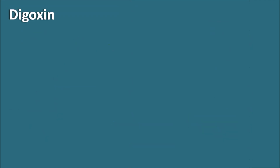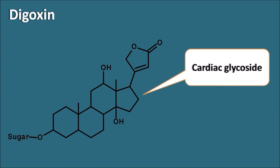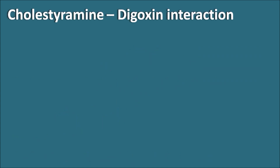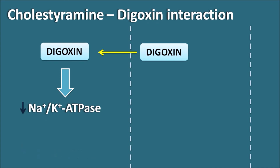Now let us look at digoxin. Digoxin has a steroidal nucleus attached with a lactone ring and is a glycoside with a sugar linkage — it is a cardiac glycoside. Digoxin is a cardiotonic that increases the force of contraction of the heart. It is absorbed from the GIT into systemic circulation, where it reaches the heart and inhibits the sodium-potassium ATPase pump, increasing intracellular calcium levels and thereby increasing the force of contraction.